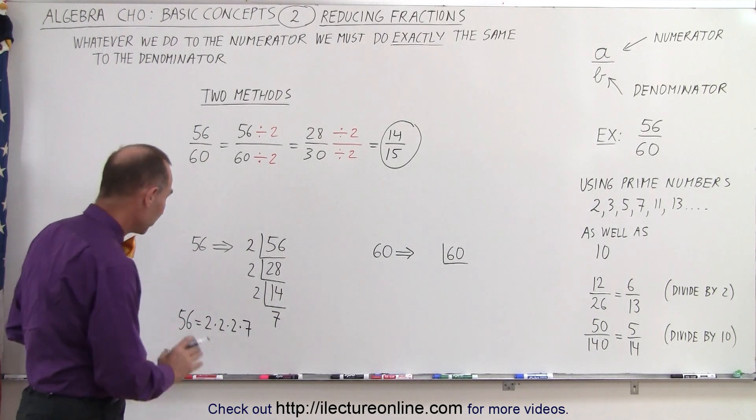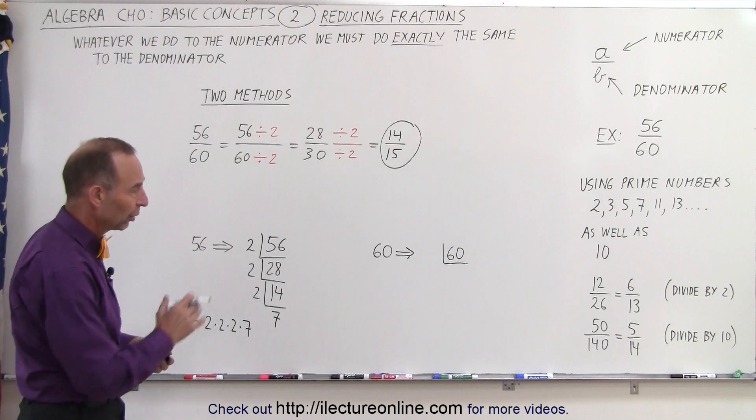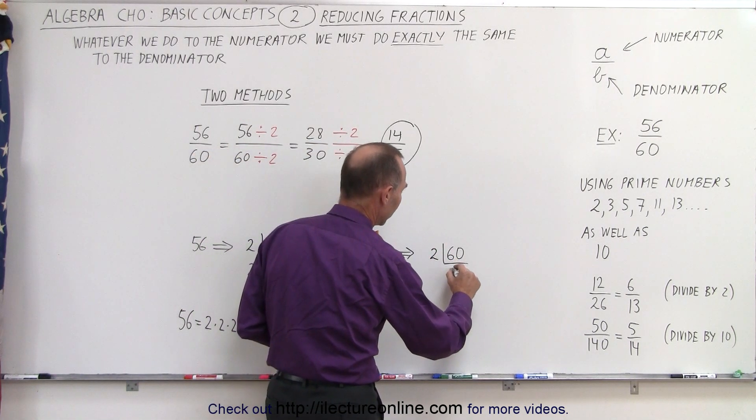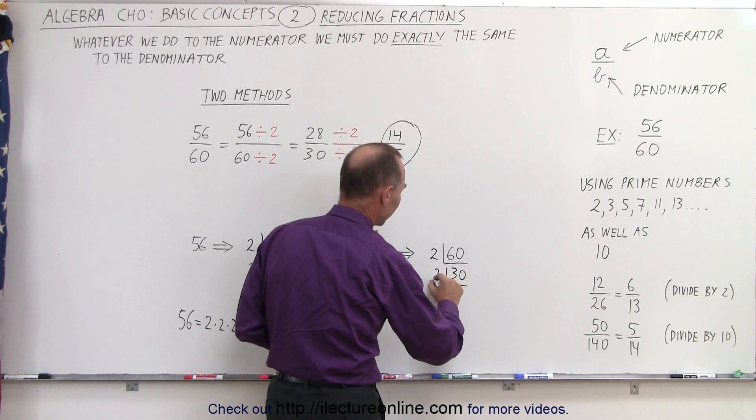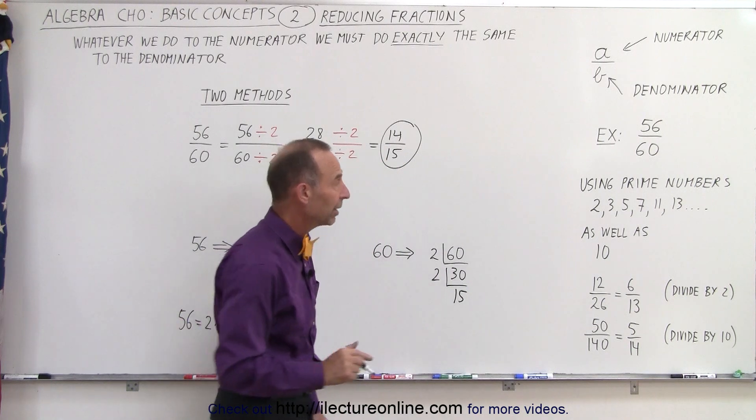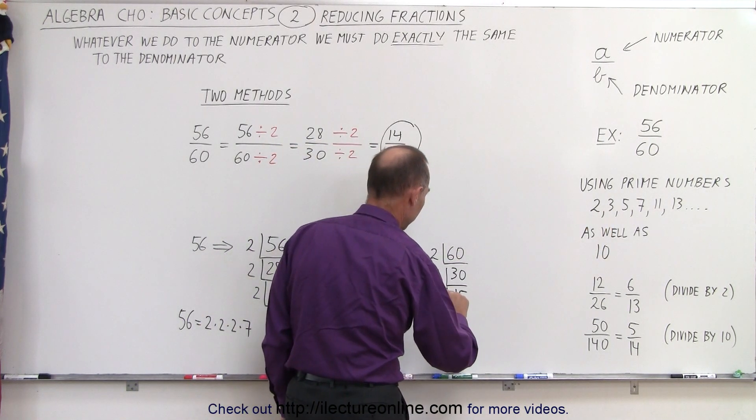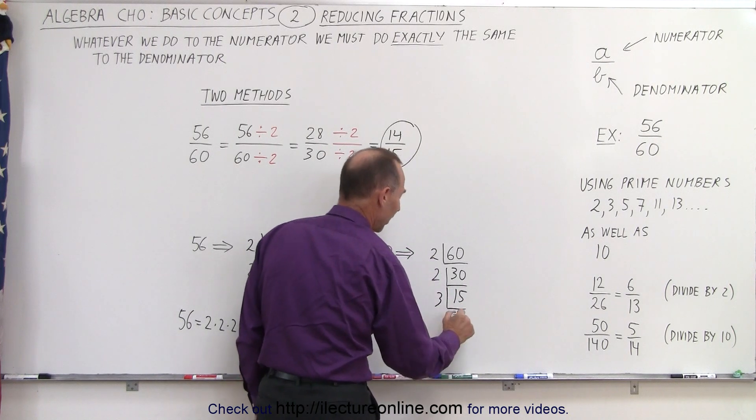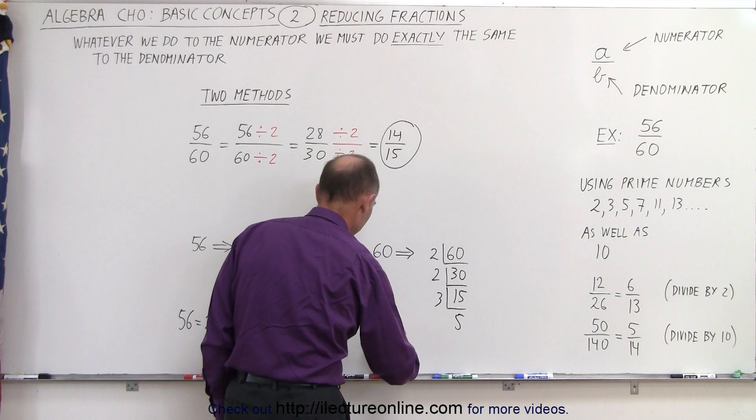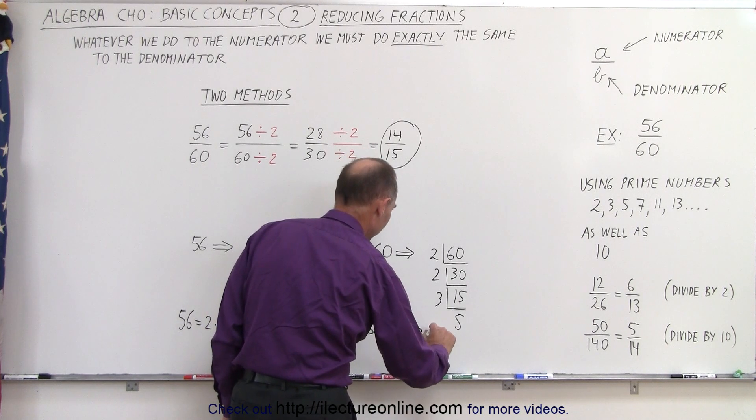So what we've done now is we've written number 56 as the product of its factors. We'll do the same for the number 60. Since it's even, we can divide it by 2. We get 30. Since 30 is still even, we can divide it by 2 to get 15. Now that's no longer even, so we grab the next prime number, 3. And 15 is indeed divisible by 3, which gives us 5. Since 5 is a prime number, we cannot go on. And so we can write that 60 is equal to 2 times 2 times 3 times 5.